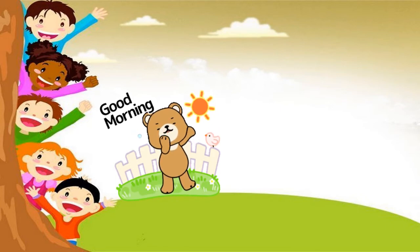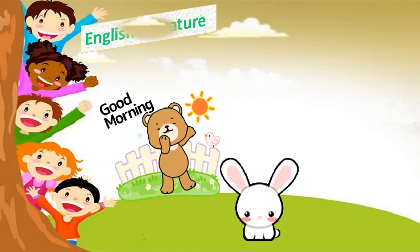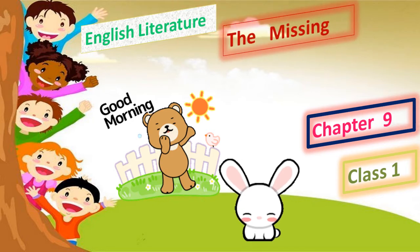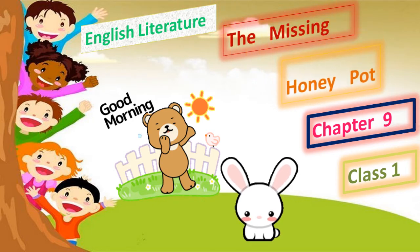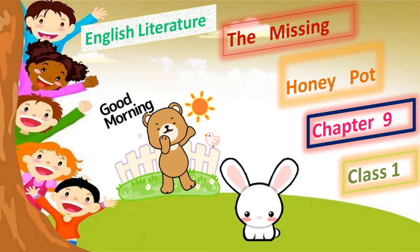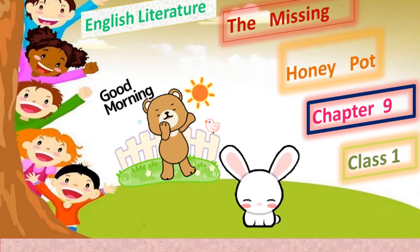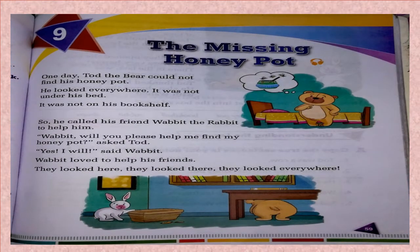A very good morning to my dear students. Welcome to your English Literature class, Chapter 9: The Missing Honey Pot. Today we are going to read the chapter and solve some of the exercises from the text. You also have to do some written work in your English Literature exercise book.